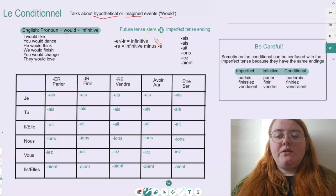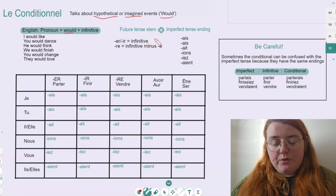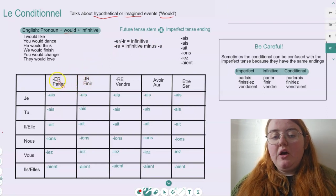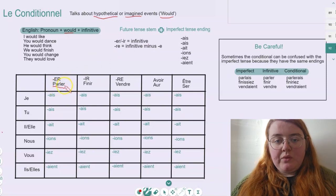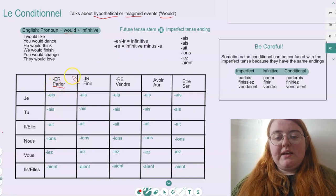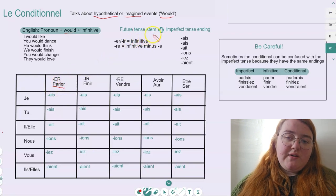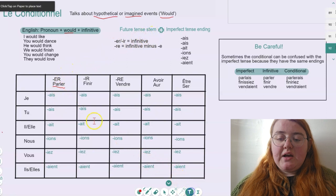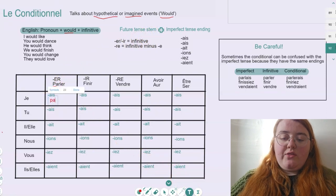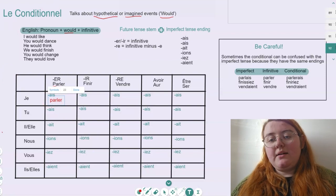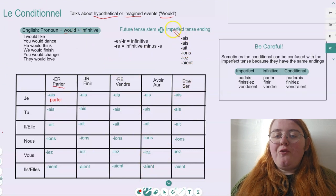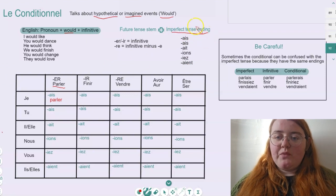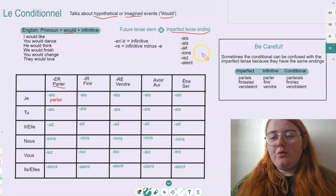All the infinitive stays as our stem. So if we have a look at our first example, for our ER verb, we have parler, which is 'to speak'. Because this is an ER verb, and we know we keep the infinitive as the stem, we're going to start our conjugation with the verb parler, and then we're going to add our ending onto that. Now, speaking of our endings, for the conditional tense, we want to use the imperfect tense endings. So let's have another look through these.